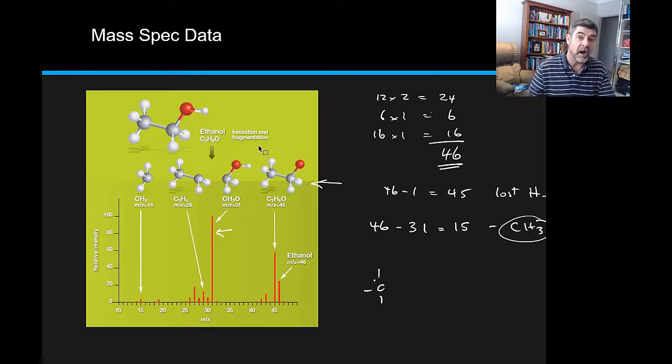Now it could be at either or both ends. It's not telling us how many there are at this point in time. It's just telling us that when this particular molecule fragments, one of the fragments that can be ripped off it is a CH3 group.